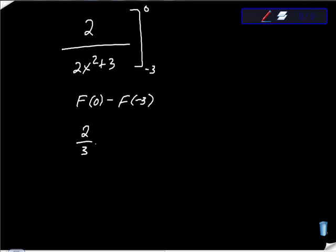It's 2/3 minus f(-3), and f(-3) is 2 over... -3 squared is 9, so 18 + 3 is 21, right?